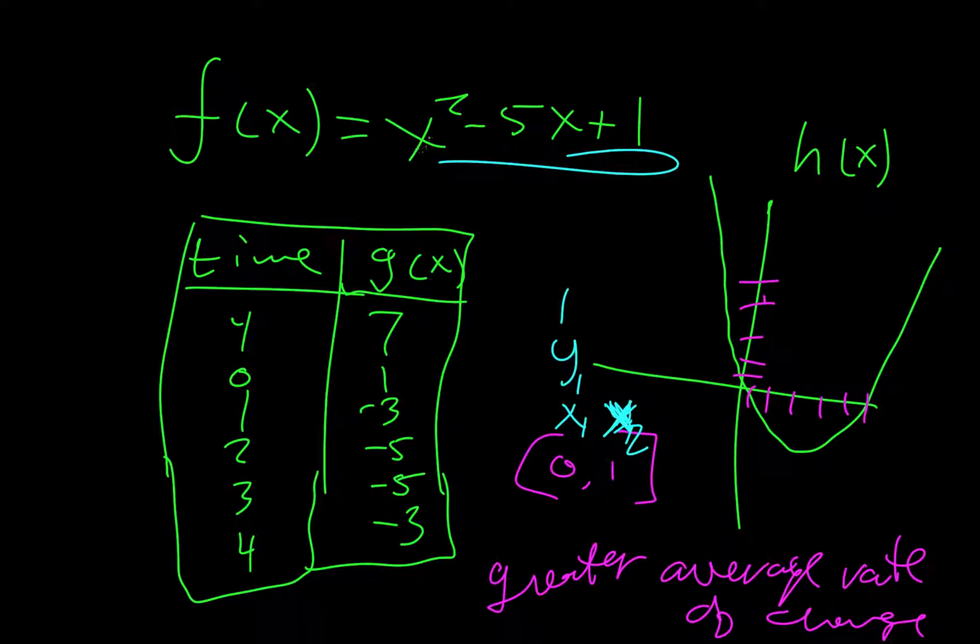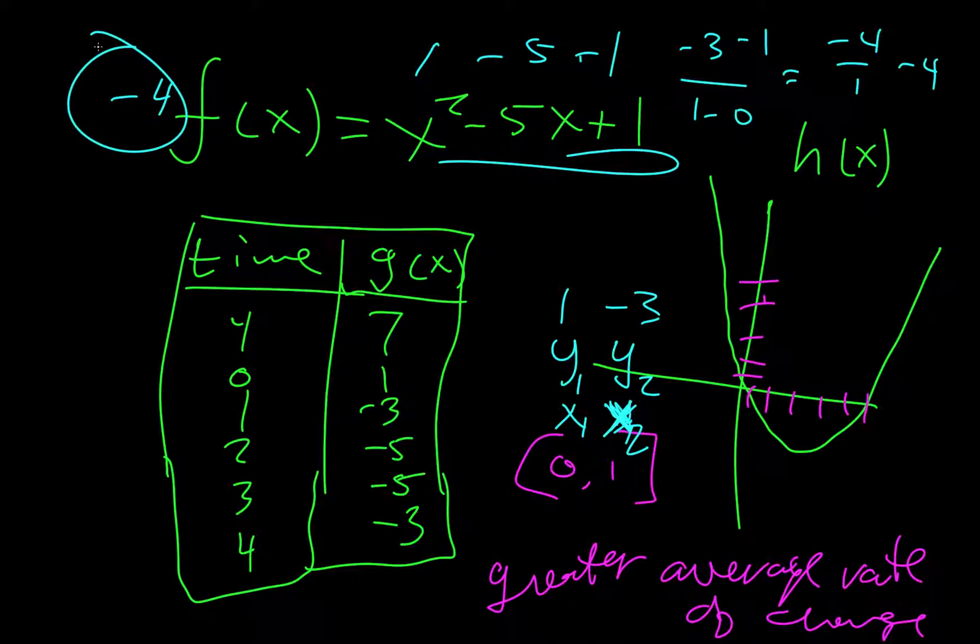Now if I plug in a 1 for these, I get 1 squared, which is 1. I get negative 5, positive 1. And that becomes a negative 3. So y2 equals negative 3. And if I do the average rate of change of that, I do y2 minus y1 over x2 minus x1. So that's negative 4 over 1, or negative 4. So the average rate of change on that is negative 4.